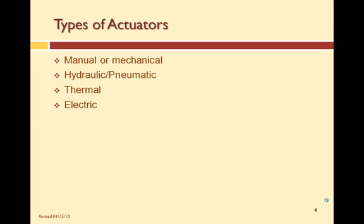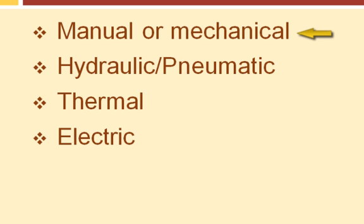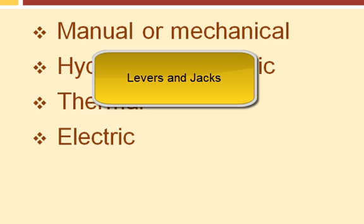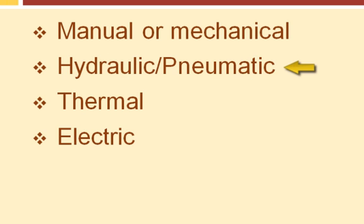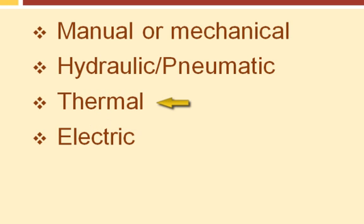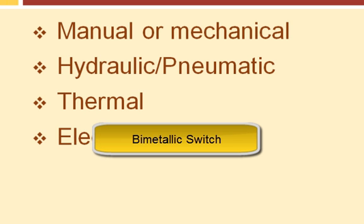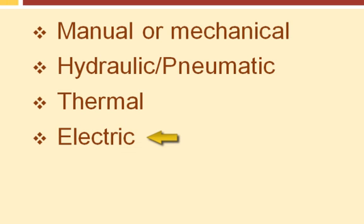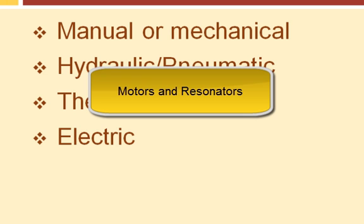The energy used on the input of an actuator determines its classification. For example, manual actuators require a manual or mechanical input — such actuators include levers and jacks. Hydraulic and pneumatic actuators use pressurized liquid or air to move something; such devices include pistons and valves. Thermal actuators use hot and cold temperatures; the type we will discuss is the bimetallic switch. Electric actuators use electricity as the input energy; such actuators include motors and resonators.